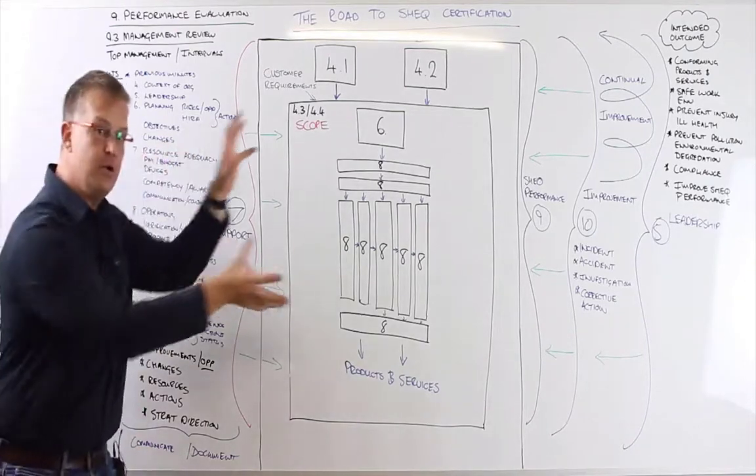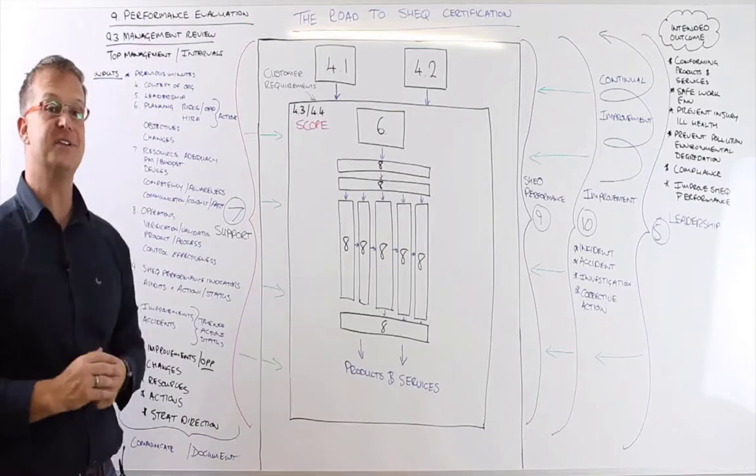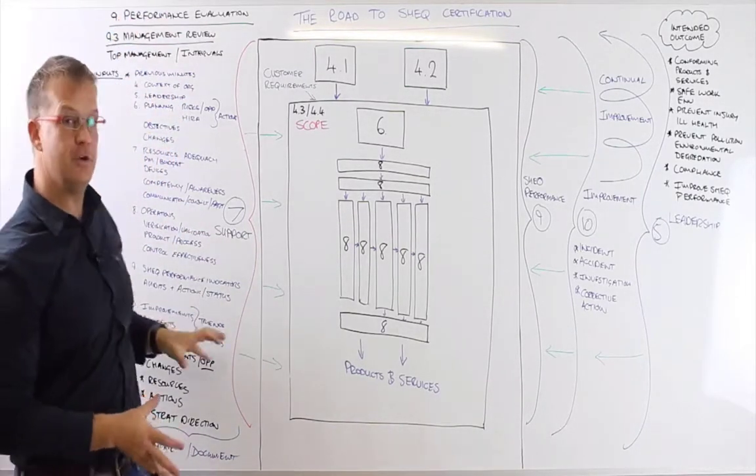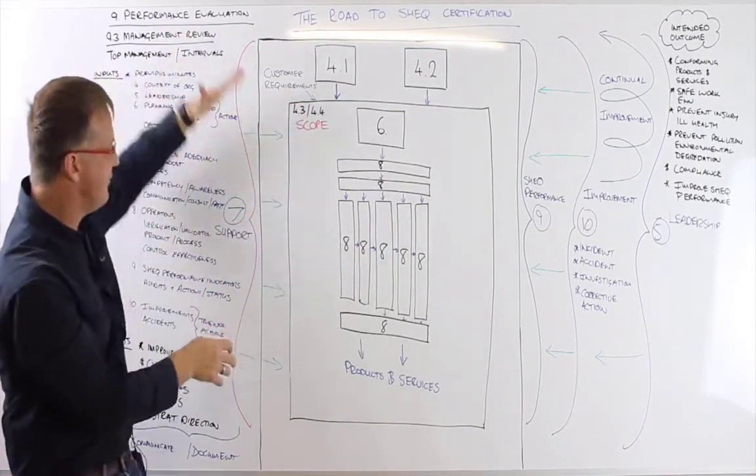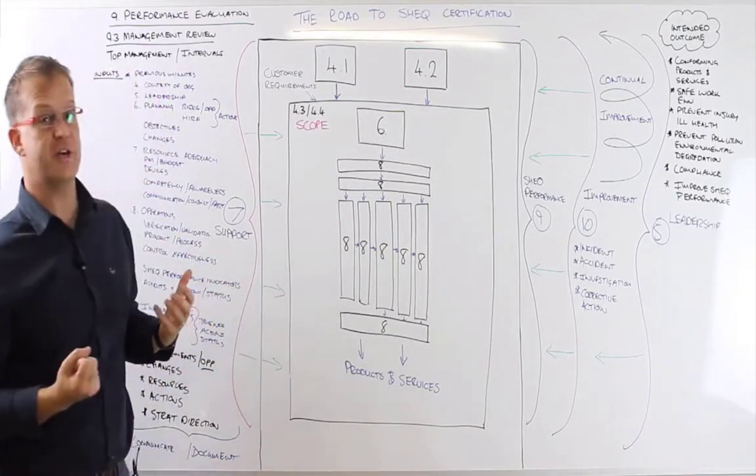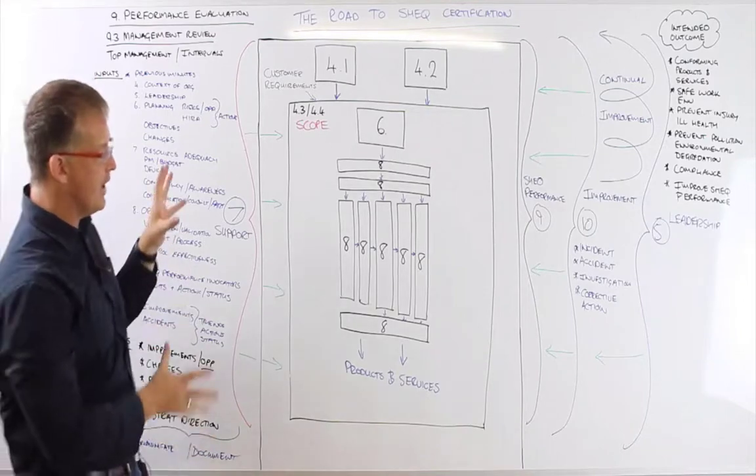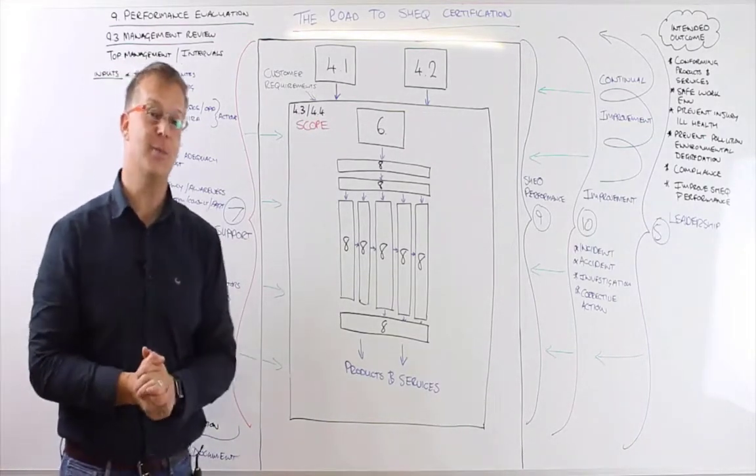Obviously needs to be retained as documented information. So that's an overview of management review, where we have a look at the performance indicators through the various different clauses. Top management review it, hopefully in consultation with non-managerial workers and worker representatives, and they will then create an action plan to continually improve the SHE management system.